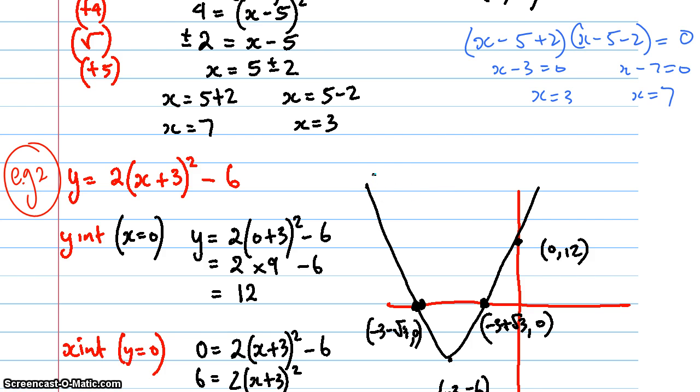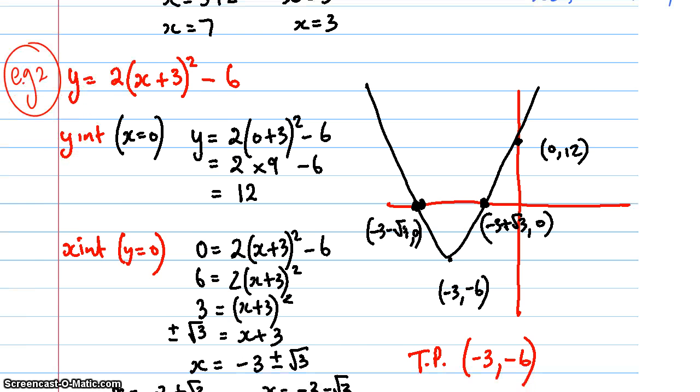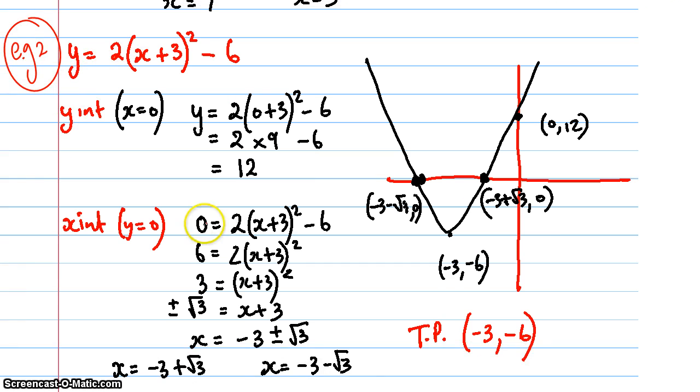And now I want to find my x-intercepts. So I make y equals 0 and I go about solving that. There's lots of different ways that you can go about this. I'm going to go about it this way, and you can have a look at it and see if you understand. So if you follow me from here, 0 equals 2 multiplied by x plus 3 all squared minus 6. I add 6 to both sides and then I divide by 2 on both sides to get rid of that number in front of the brackets. Then I've got x plus 3 all squared equals 3.